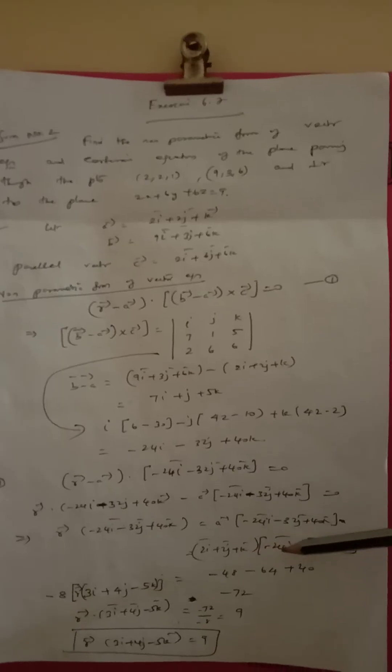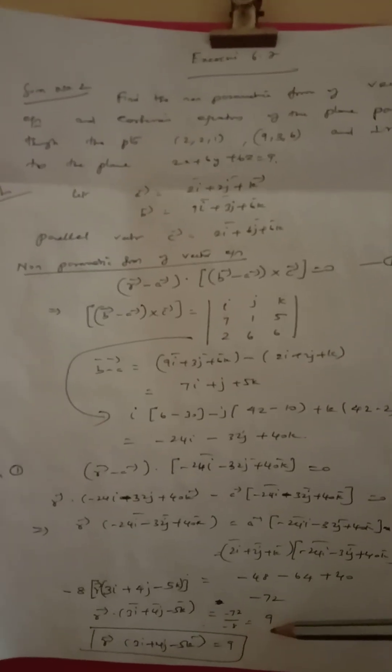So r vector dot (minus 24i minus 32j plus 40k) equals a vector (2i + 2j + k) dot (minus 24i minus 32j plus 40k), giving minus 48 minus 64 plus 40, which equals minus 72. Dividing by minus 8: r vector dot (3i + 4j minus 5k) equals 9.